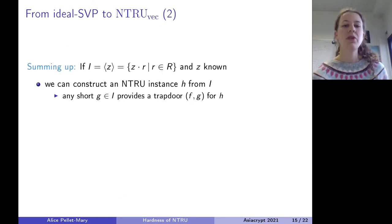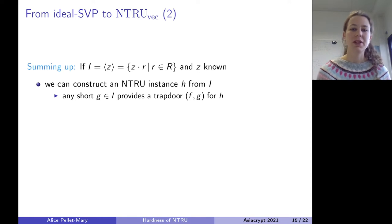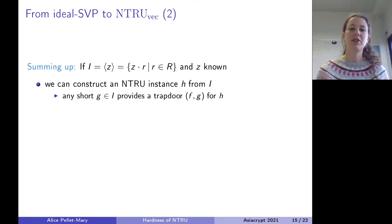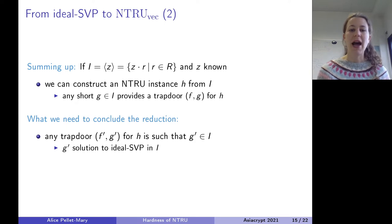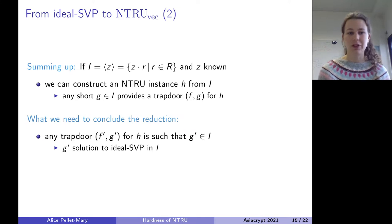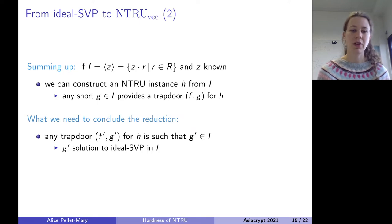Given a principal ideal, I can construct an NTRU instance such that if G is a small element of the ideal, there exists a trapdoor F for the NTRU instance H. You can prove the converse: any trapdoor F', G' for H will have G' being an element of the ideal. Since G' is small (it's a trapdoor), this gives a small element in the ideal. So you can solve ideal SVP by solving NTRU for input H.